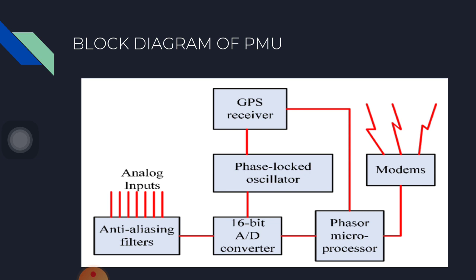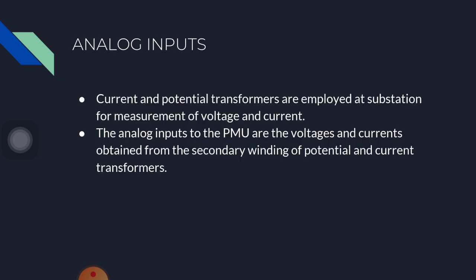Block diagram of PMU. In this block diagram, the data passes through anti-aliasing filters connected to the 16-bit AD converter. The AD converter is connected to the phase-locked oscillator and GPS receiver. The GPS receiver is connected to the phasor microprocessor, and the phasor microprocessor is connected to the modem.